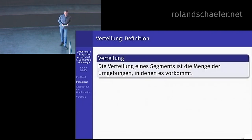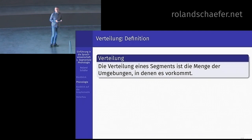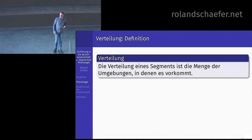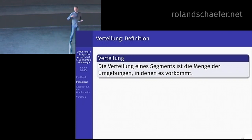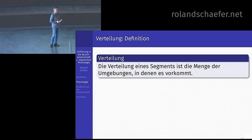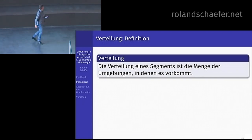Was wir hier gesehen haben, waren Verteilungen von bestimmten Segmenten. Die Verteilung eines Segments ist die Menge der Umgebungen, in denen es vorkommt — zum Beispiel am Silbenanfang, am Silbenende, nach bestimmten Konsonanten, oder vor bestimmten Vokalen. Nicht jedes Segment kann überall vorkommen. Das sind Verteilungen.